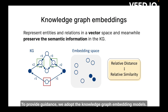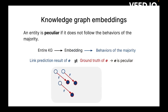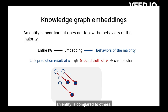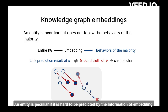To provide guidance, we adopt Knowledge Graph Embedding models. Embeddings learn high-dimensional vectors for each entity while preserving their semantic information. Based on Knowledge Graph Embedding, we design peculiarity, a metric for measuring how peculiar an entity is compared to others. Assuming that the embeddings learn the behavior of the majority, an entity is peculiar if it is hard to predict from the embedding information.